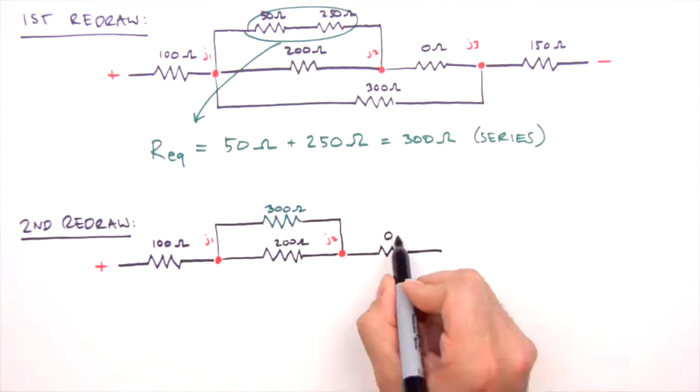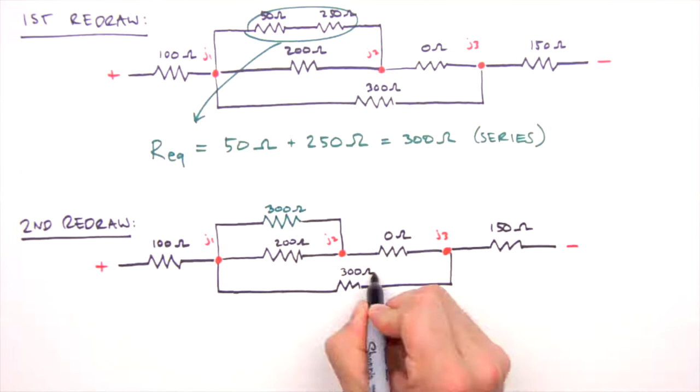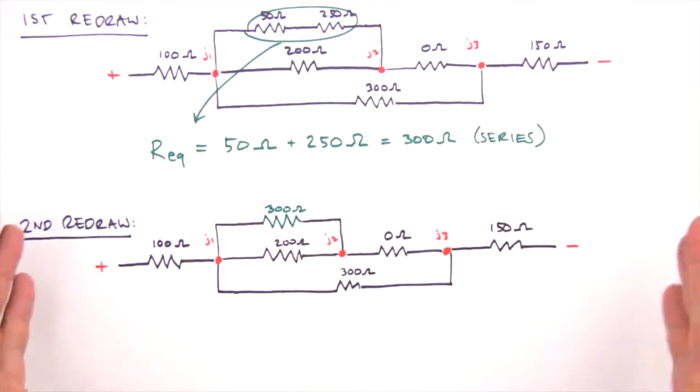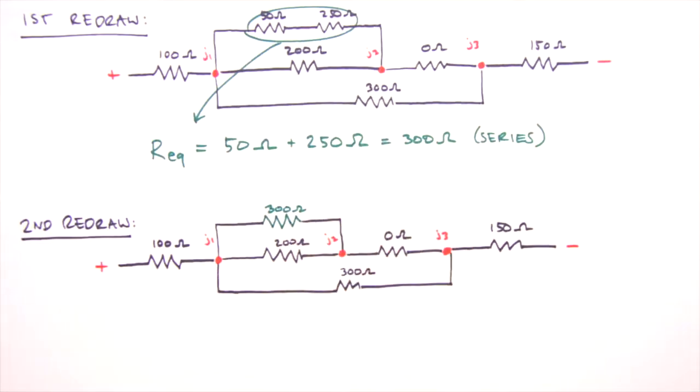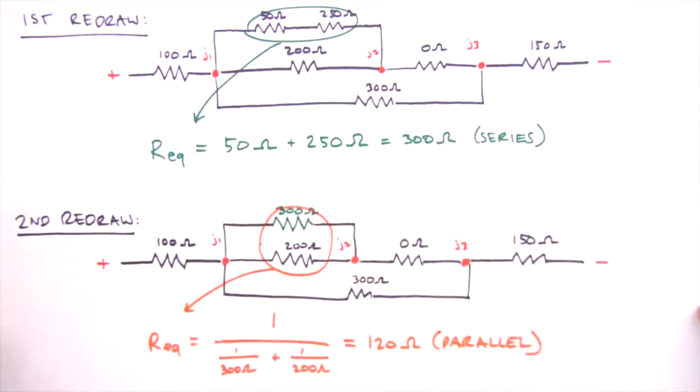Once we finish our second redraw, we again turn our attention to the circuit diagram and determine the resistors furthest from the battery. Moving inward from the sides of the battery, we find that these two resistors are the next to be combined. We calculate their equivalent resistance differently because they're not in series, but in parallel with one another. So for our 300 and 200 Ohm resistors, REQ equals 1 divided by 1 over 300 Ohms plus 1 over 200 Ohms, which equals 120 Ohms. So for resistors in parallel, the equivalent resistance is equal to the reciprocal of the sum of the reciprocals.